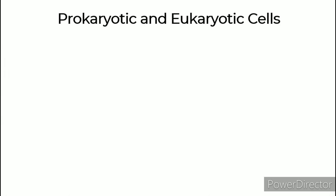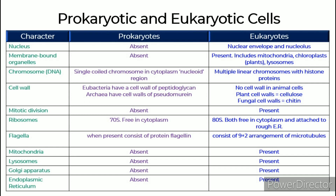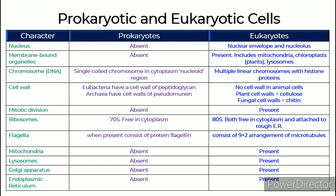Difference between Prokaryotic and Eukaryotic Cells: In microbiology there are two types of organisms — prokaryotic and eukaryotic. Nucleus: In prokaryotes, the nucleus is absent, whereas in eukaryotes, the nuclear envelope and nucleolus are present.